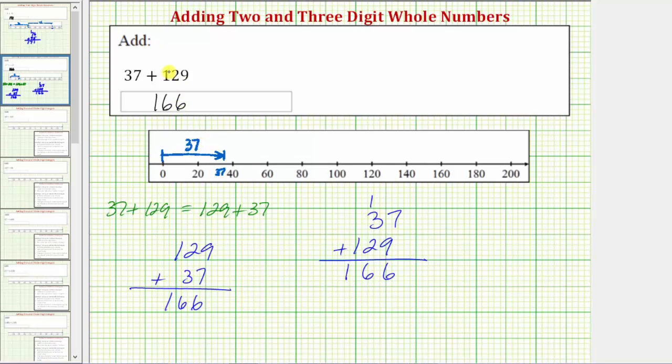And then because we're adding one hundred twenty-nine, we would move one hundred twenty-nine units to the right from thirty-seven, which would bring us out to one hundred sixty-six. Thirty-seven plus one hundred twenty-nine equals one hundred sixty-six.